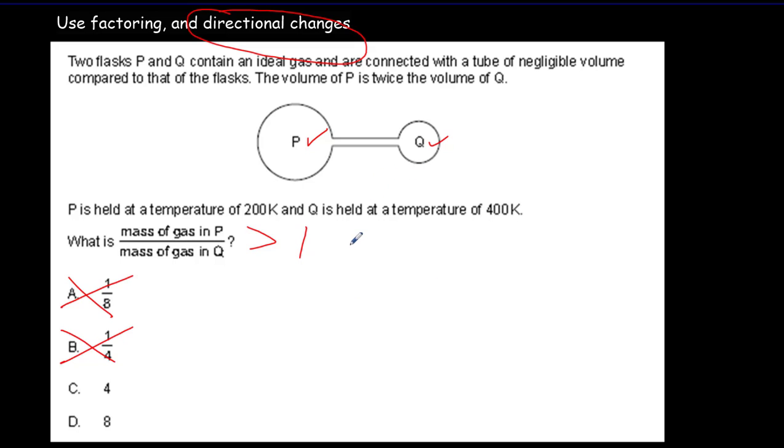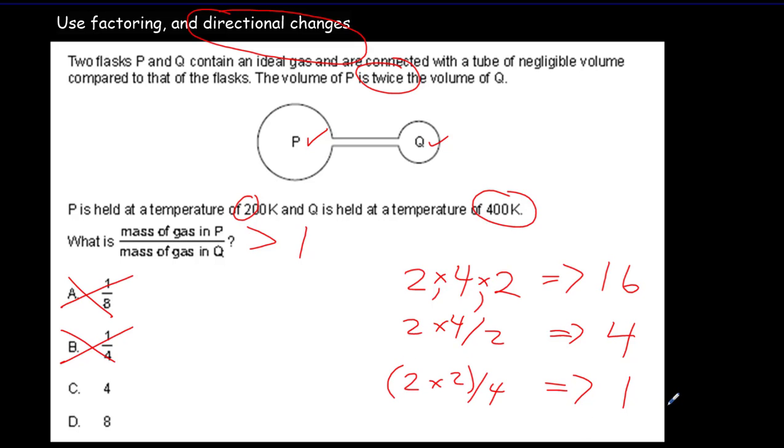I would then consider the factors that I'm given. I'm given a 200, which is a factor really of 2. I'm given a 400, a factor of 4. And I'm given a twice, which is a factor of 2. Now if I multiply all those together, I get 16. If I multiply the 2 and the 4 and then divide by the 2, I'll get 8 divided by 2 is 4. Or if I multiply the two 2's together and divide by 4, I'd get 1. So this was 2 times 4 over 2, this was multiplying them, and this was 2 times 2 divided by 4. And you'll notice here that there's really no way of getting an 8 if I multiply or divide the 2, the 4, and the 2. And for that reason, I would eliminate the 8 here and I'd choose answer C.